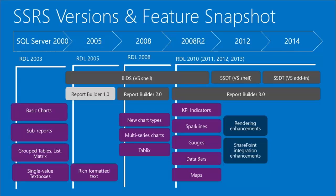In 2008, a lot of new features were added — new chart types, new visuals. The tablix replaced the table, matrix, and list as a more advanced way to consume data and group it. When you added a table or a matrix, you were adding an instance of the tablix, and then certain properties were automatically set by the designer.